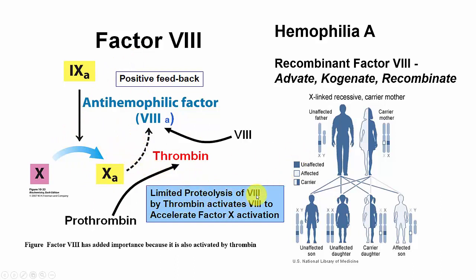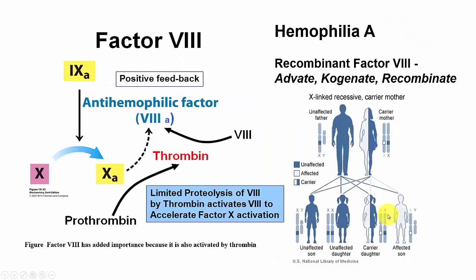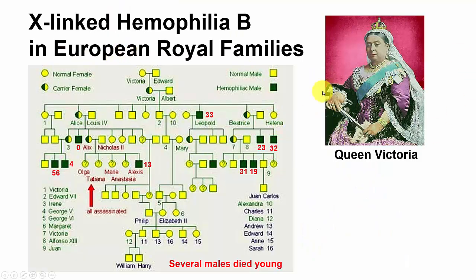Limited proteolysis of Factor 8 by thrombin activates and accelerates Factor 10 activation. Recombinant forms of Factor 8 are now available to treat the disease. Years ago, blood products isolated from large pools of donor blood were used to make a Factor 8 fraction to treat hemophilia. Unfortunately, a number of children developed HIV because there was no testing for HIV at that time.